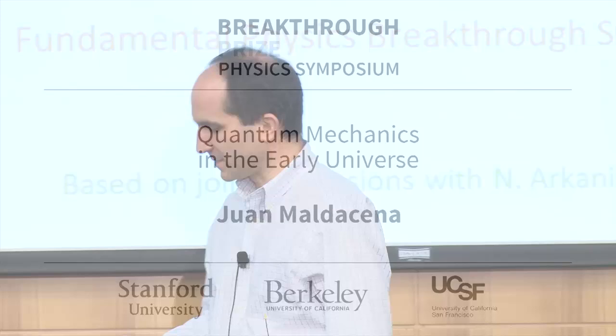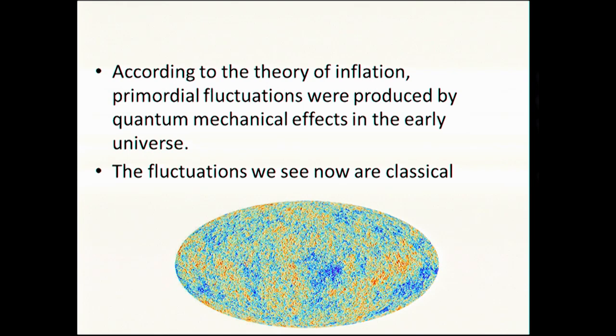OK, thank you very much. It's a pleasure to be able to speak here. So as you all know, according to the theory of inflation, primordial fluctuations were produced by quantum mechanical effects in the early universe. Of course, the fluctuations we now see are classical.